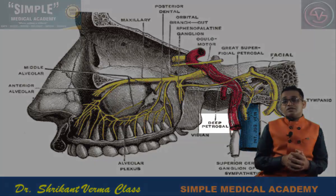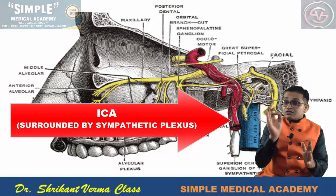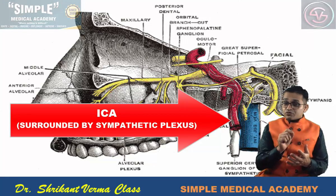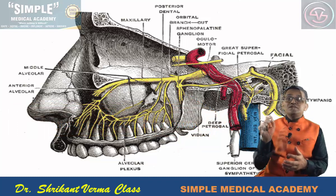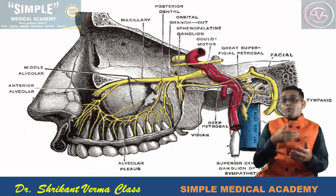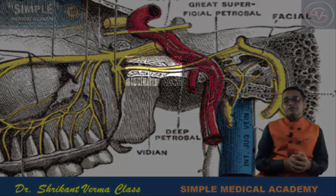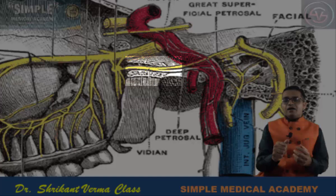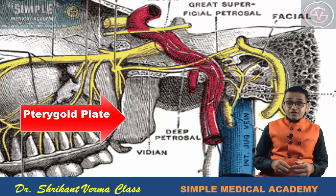The deep petrosal nerve comes from the sympathetic plexuses around the internal carotid artery, as seen in this image. These sympathetic fibers come from the root of T1 of the spinal cord, so the root value of the deep petrosal nerve is T1. This deep petrosal nerve also runs from posterior to the entry side of the foramen lacerum, then runs along the entry wall of the foramen lacerum toward a bony canal located just above the pterygoid bone, known as the pterygoid canal.